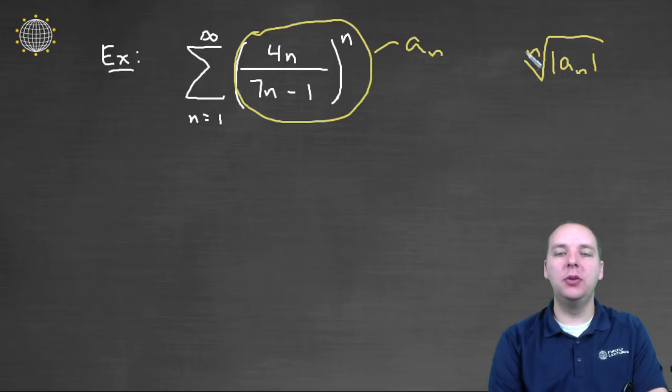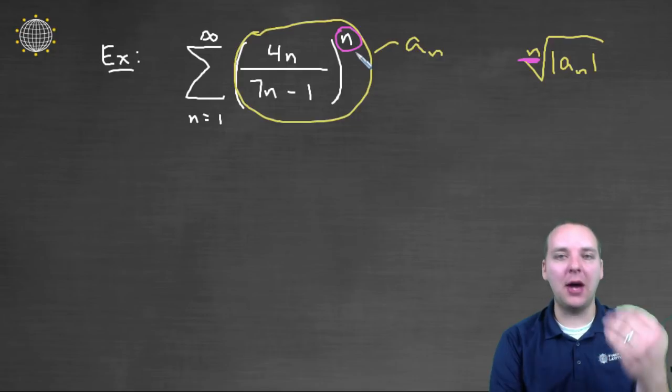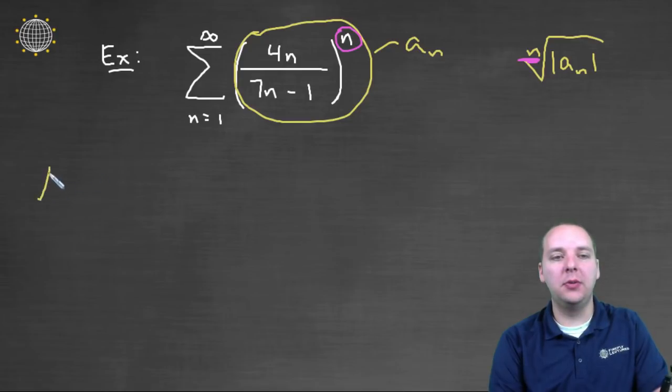Now what happens when you do the root test is because most of your terms, if you're going to use the root test, have a power, an nth power, the nth root negates that nth power and cancels it. So we'll be taking a limit, let's do this down here, we'll take a limit as n goes to infinity of,